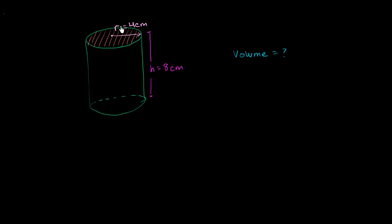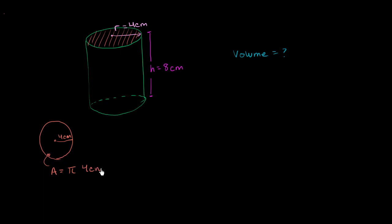So how do we figure out this area up here? Well, the area of the top is just finding the area of a circle. If we were to look at it straight on, that's a circle with a radius of 4 centimeters. The area of a circle with a radius of 4 centimeters is equal to pi r squared. So it's going to be pi times 4 centimeters squared, which equals 16 pi. And our units are centimeters squared, or square centimeters.